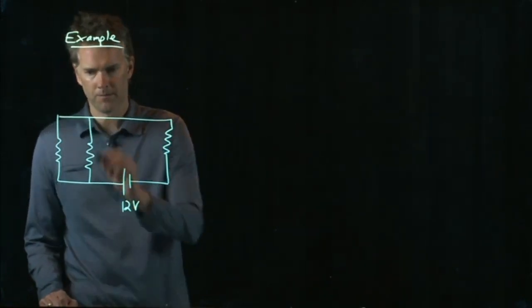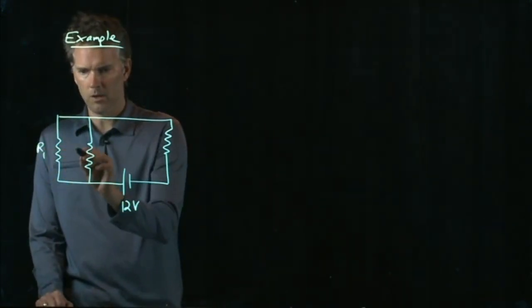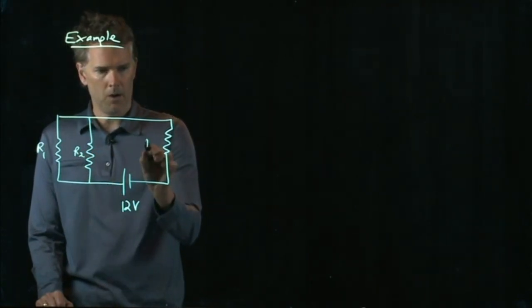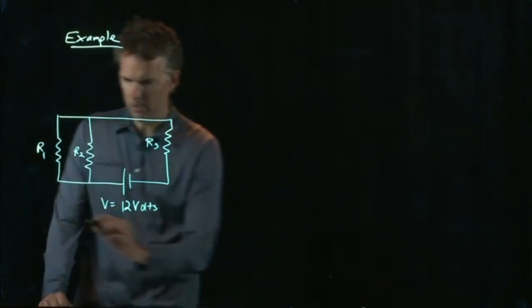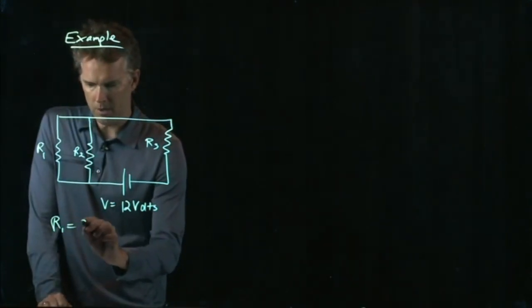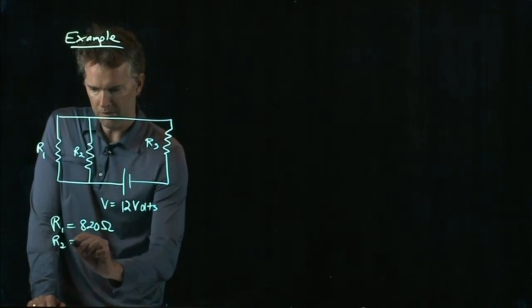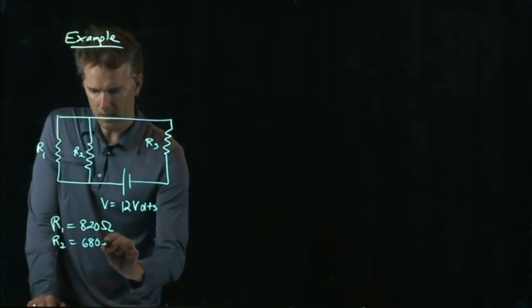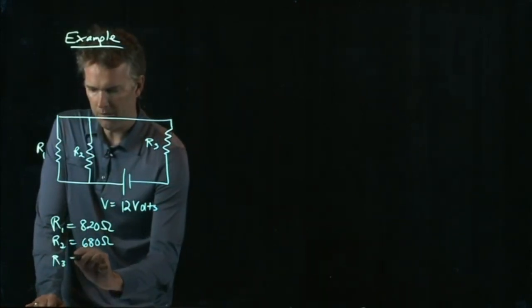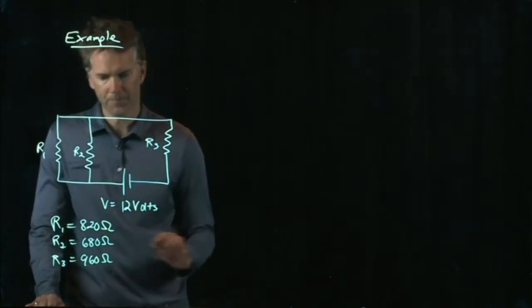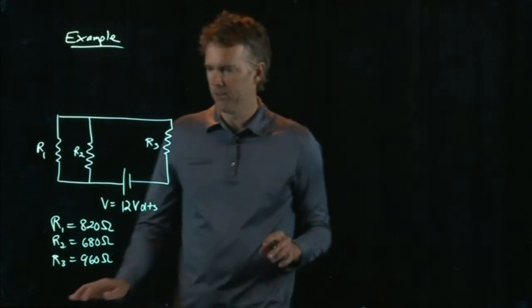And there is a resistor right there. Okay, and this one is, we'll call it R1, R2, and R3. So the voltage supply was 12 volts. R1 in my numbers is 820 ohms for that one. R2 is 680 ohms. And R3 is 960 ohms. Okay, we need to figure out the equivalent resistance of the circuit.